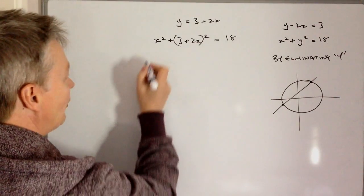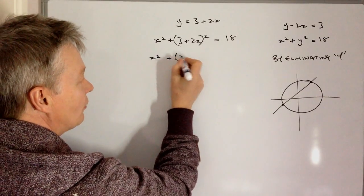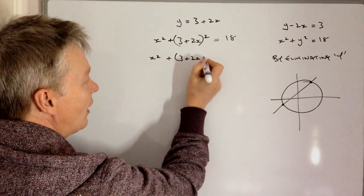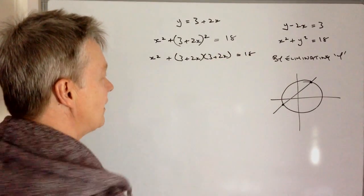So let's square this out now. I've got x squared, and 3 plus 2x I'm going to rewrite as 3 plus 2x times 3 plus 2x, and that equals 18.